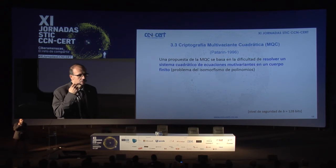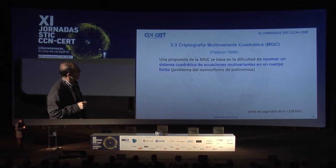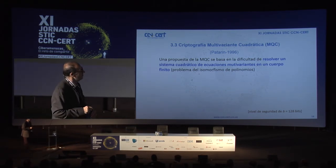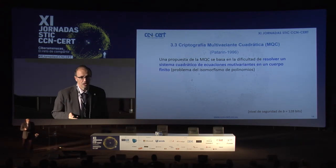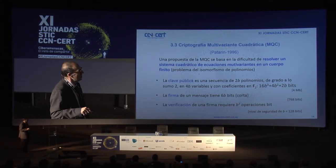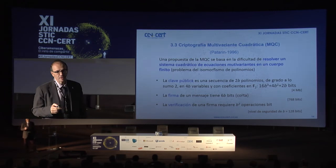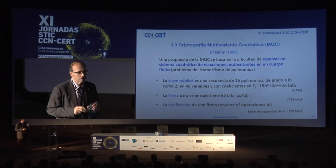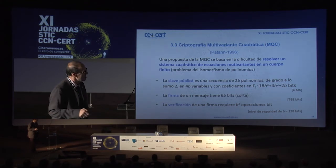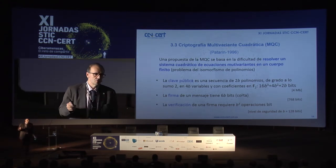La tercera propuesta es la criptografía multivariante cuadrática. El problema matemático subyacente es resolver un sistema cuadrático de ecuaciones multivariantes en un cuerpo finito, conocido como el problema del isomorfismo de polinomios. La clave pública sería una secuencia de 256 polinomios de grado 2 en 512 variables con coeficientes binarios, lo que equivale aproximadamente a 4 megabytes. La firma sí es corta —solo 768 bits—, pero el número de operaciones para una verificación de firma es 2 elevado a 28 al cubo.